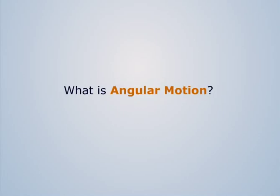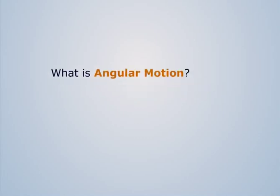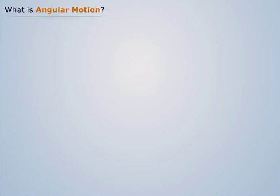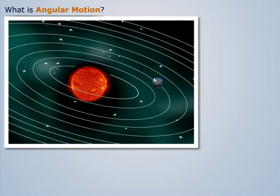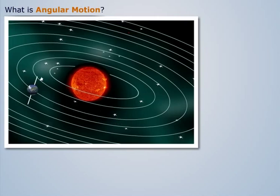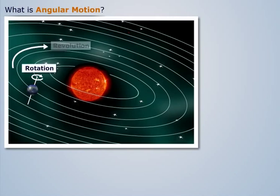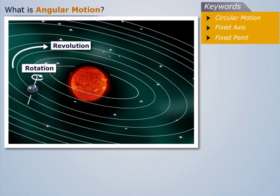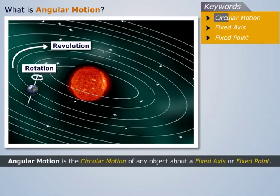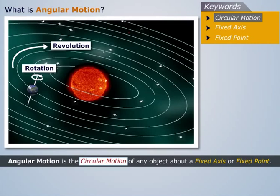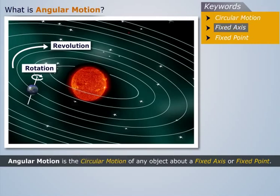What is angular motion? To understand angular motion, let us take an example of an earth moving around the sun. We know that the earth rotates about its own axis and revolves around the sun in circular motion. Thus we can say that angular motion is the circular motion of any object about a fixed axis or fixed point.